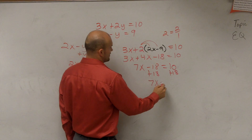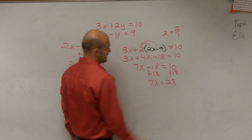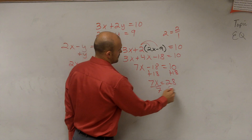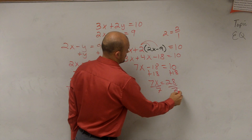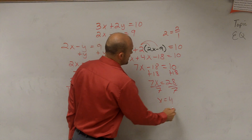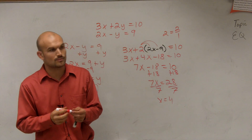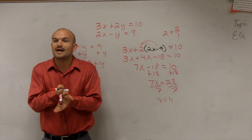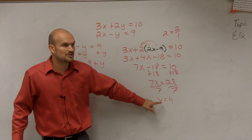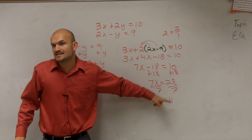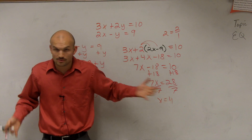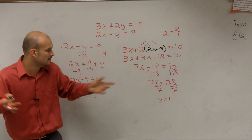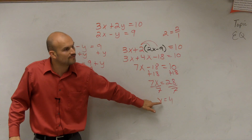Add 18 to both sides: 7x equals 28. Divide by 7. So, thinking about this graphically, where these two lines intersect, the x-value of the intersection point is x equals 4. Remember, the intersection point is a coordinate point with both an x and a y value, so the x value is 4.